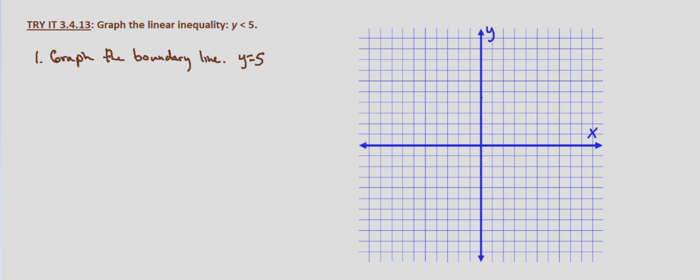So 1, 2, 3, 4, 5 dashed because it's non-inclusive. It's strictly less than, not less than or equal to. So there's our line y equals 5 dashed because the inequality is non-inclusive.